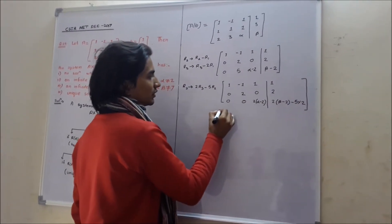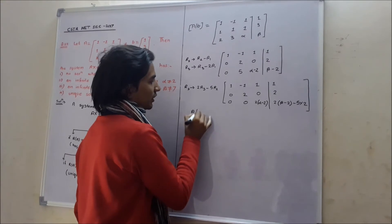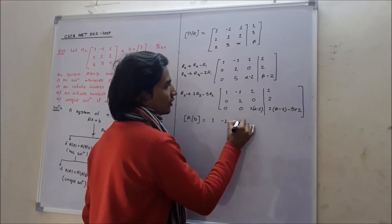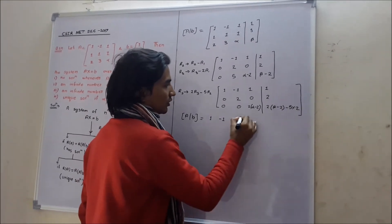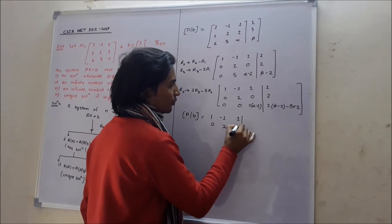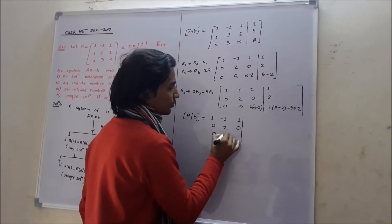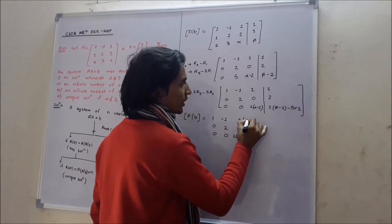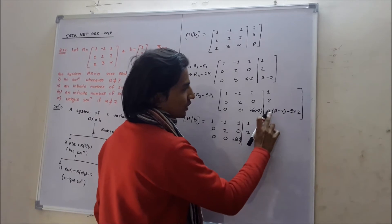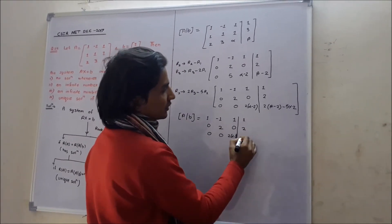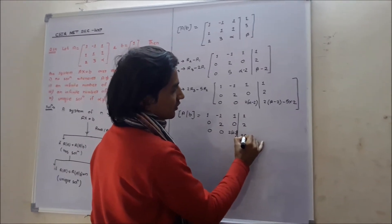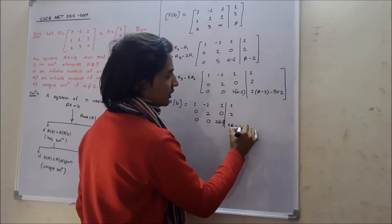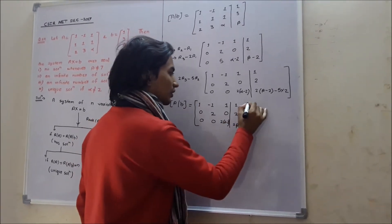Simplifying, the augmented matrix [A|b] becomes: row 1: 1, -1, 1, 1; row 2: 0, 2, 0, 2; row 3: 0, 0, 2·alpha - 2 - 1 | 2·beta - 2 - 10, giving entries like 2 alpha - 4, -14, and 2 beta - 14. The upper portion gives rank of A, and the whole matrix gives rank of the augmented matrix [A|b].